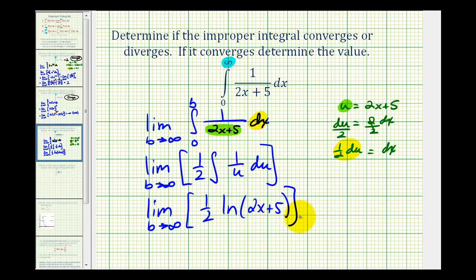And the limits of integration were from zero to b. So we'll have the limit as b approaches infinity of one half natural log two b plus five minus one half natural log. When x is zero we'll have just natural log five.